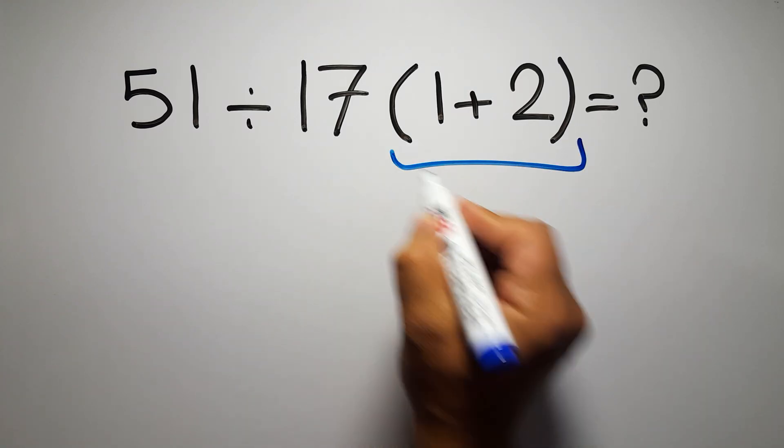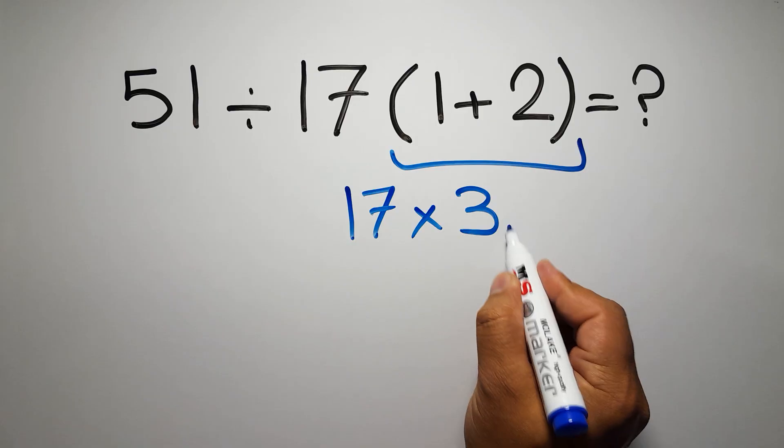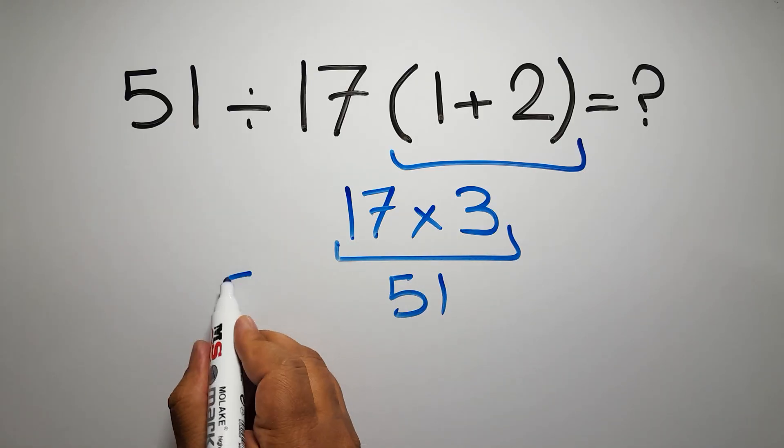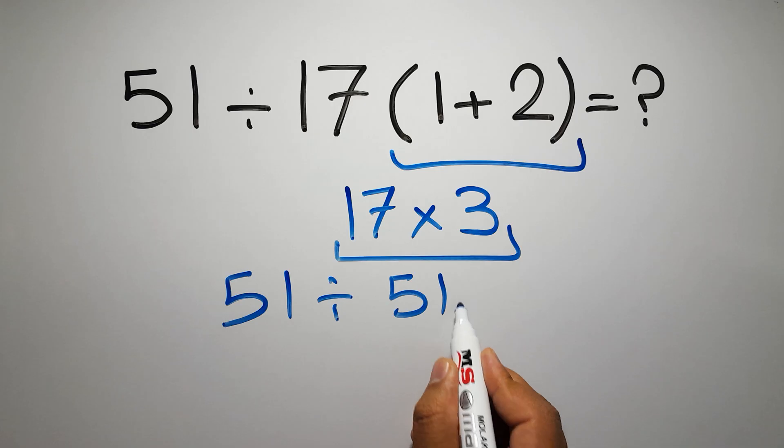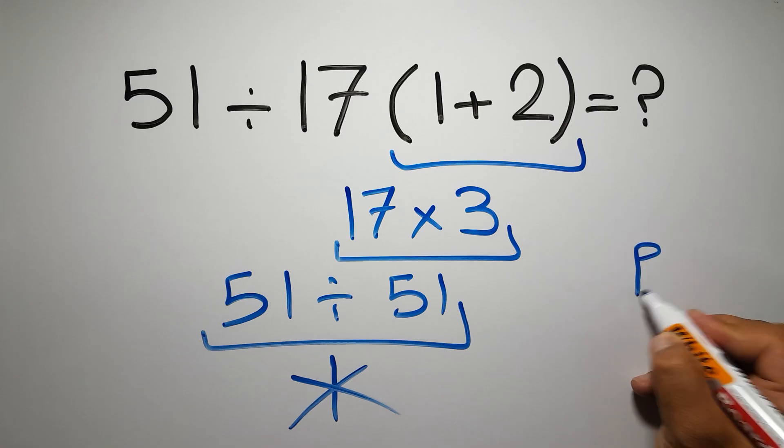1 plus 2 gives us 3, and 17 times 3 gives us 51, so 51 divided by 51 equals 1. But this answer is not correct because according to the order of operations, first we have to do parentheses.